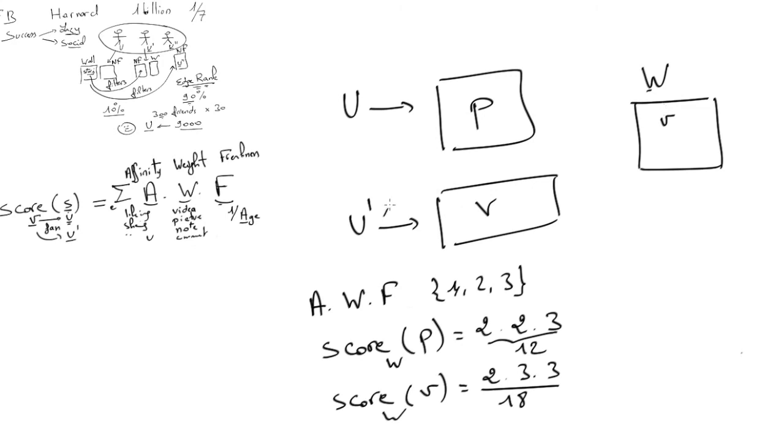Now assume later on that U' comments on this picture, for example, by adding another picture to it. So now the score will change. First, the original score or the score of the original creation edge will be smaller, for example, 2 times 2 times 2. But we will add to this the score of the new edge, this new picture P' that was added as a comment on P.